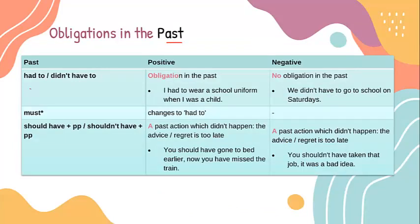Obligations in the past. The past form 'had to' or 'didn't have to.' 'Had to' expresses an obligation in the past: 'I had to wear a school uniform when I was a child.' The negative 'didn't have to' expresses no obligation in the past: 'We didn't have to go to school on Saturdays.' Must changes to 'had to.'